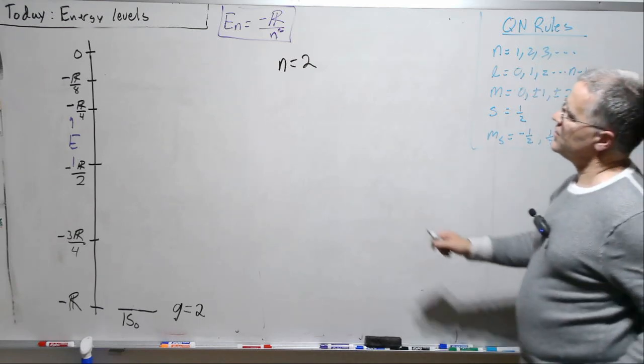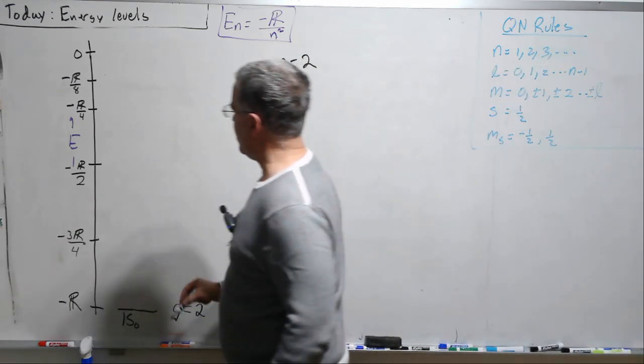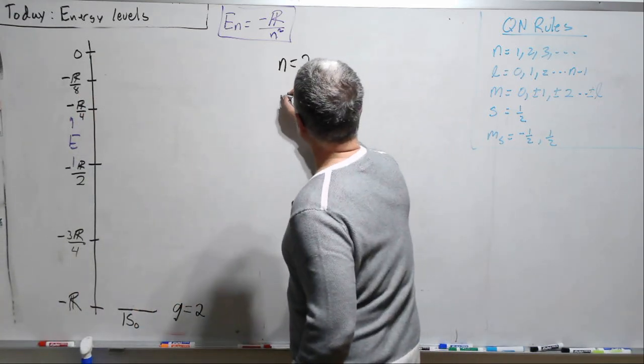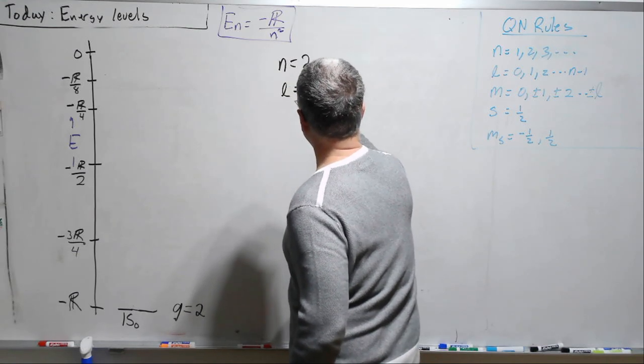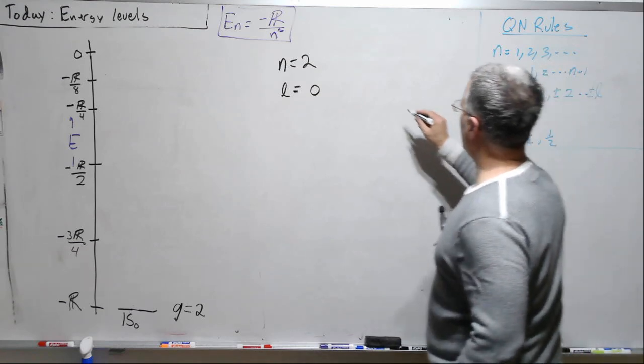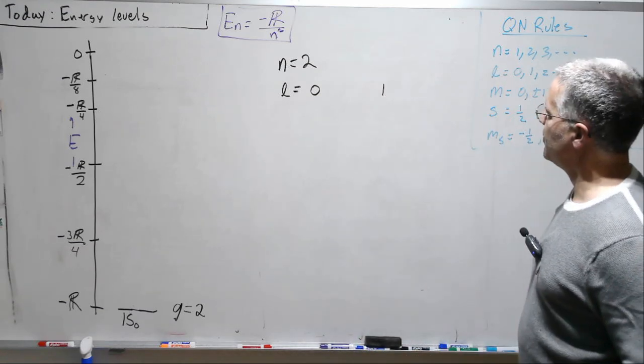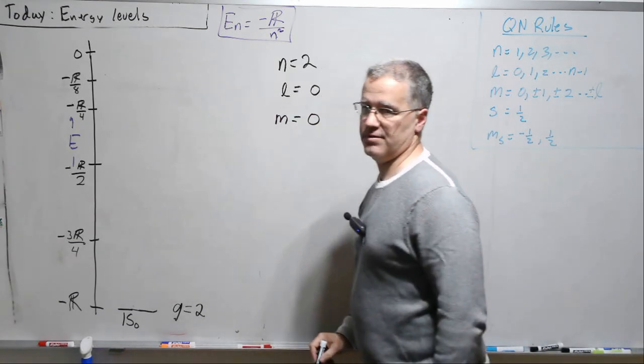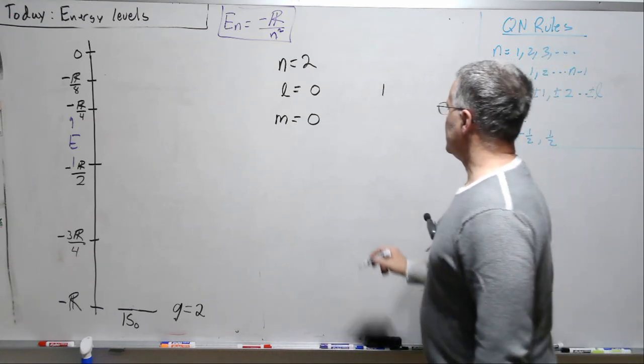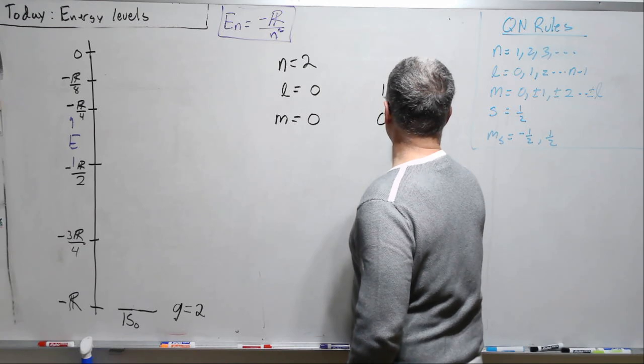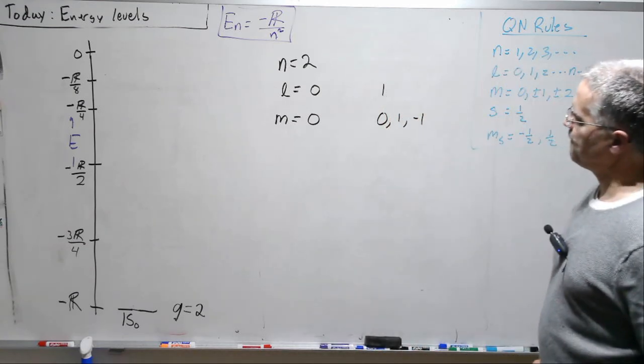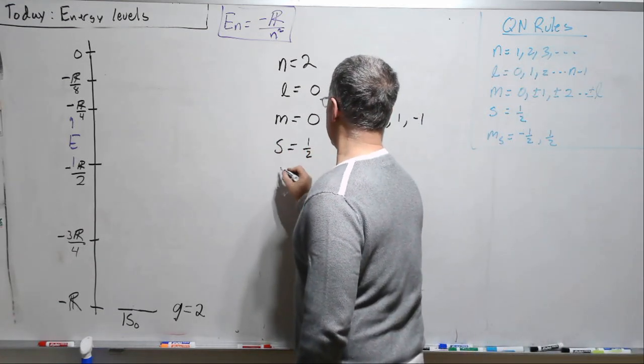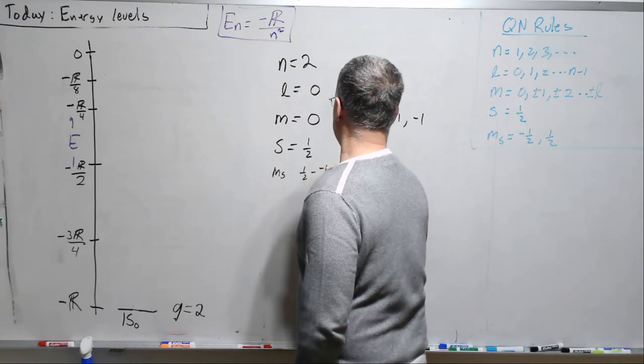So n is 2 here. So now there's a big jump. We go all the way up to here. And now we have to figure out how many states do we put up there. So n equals 2. L can be 0, or it can be 1. So put a big space over here and put it over here. If L is 0, then m is 0. If L is 1, then m can be 0, 1, or minus 1.